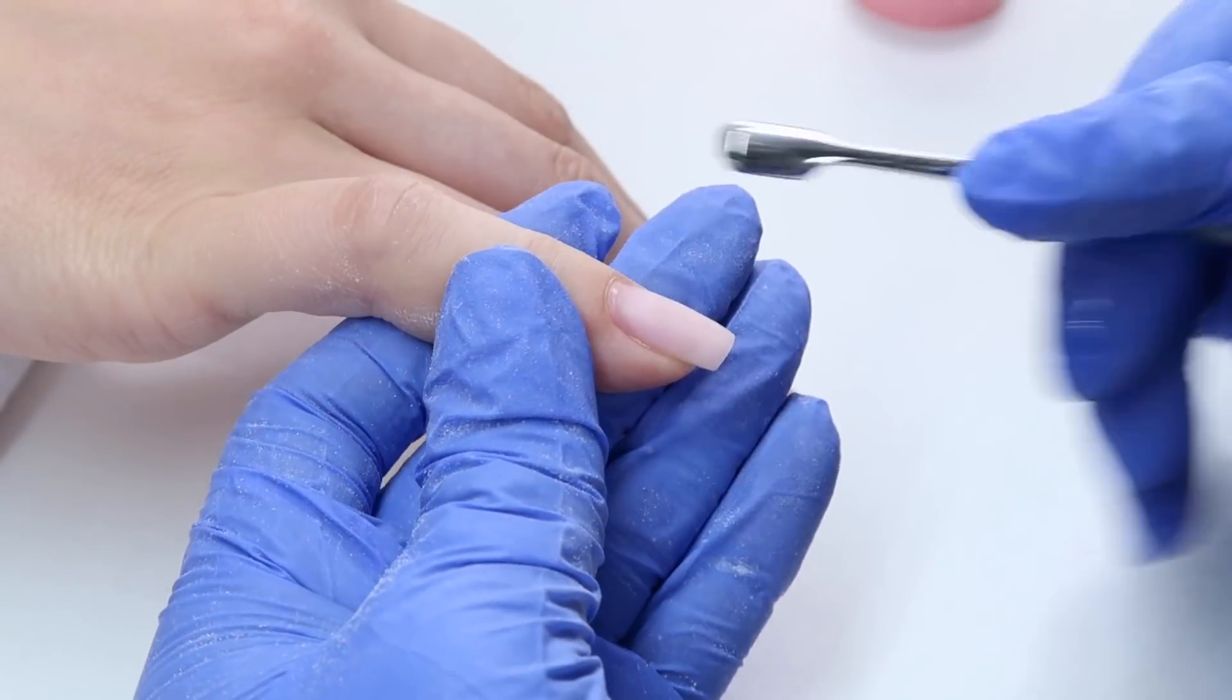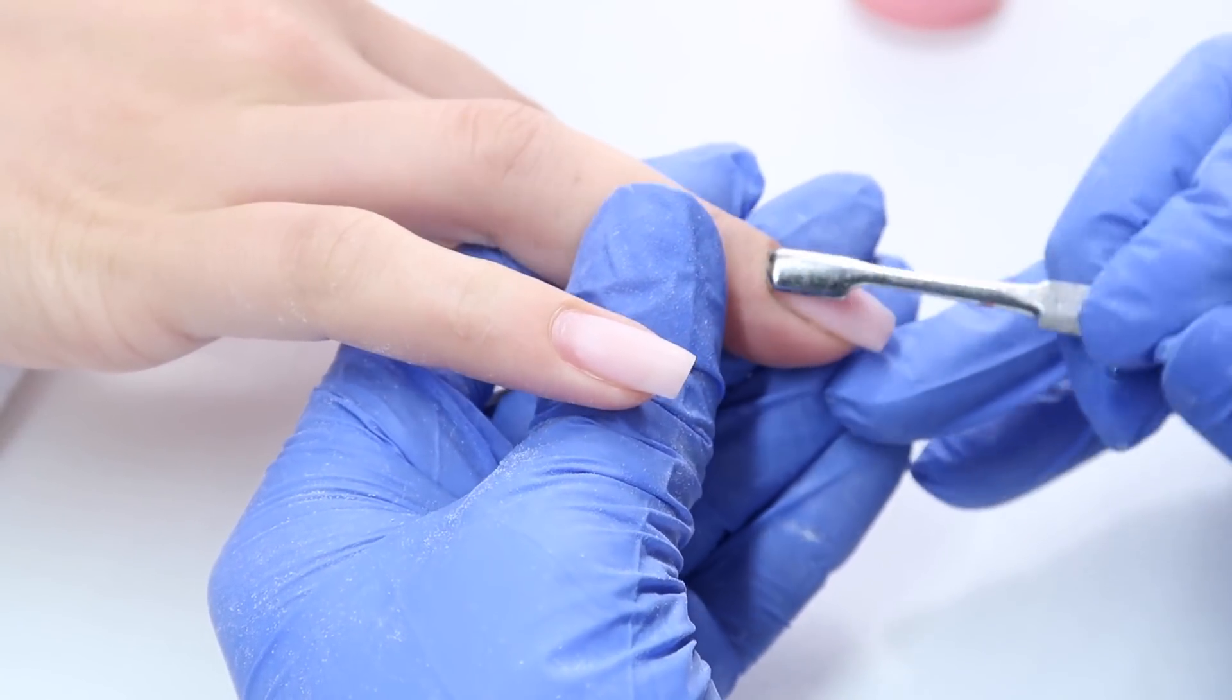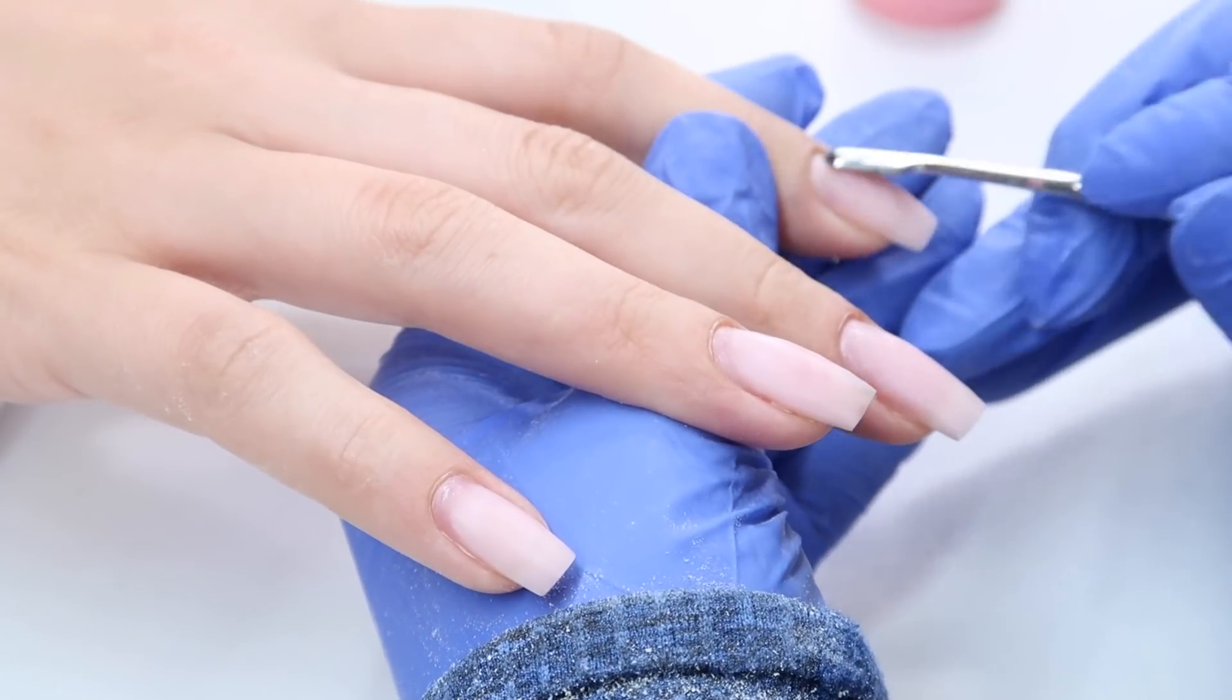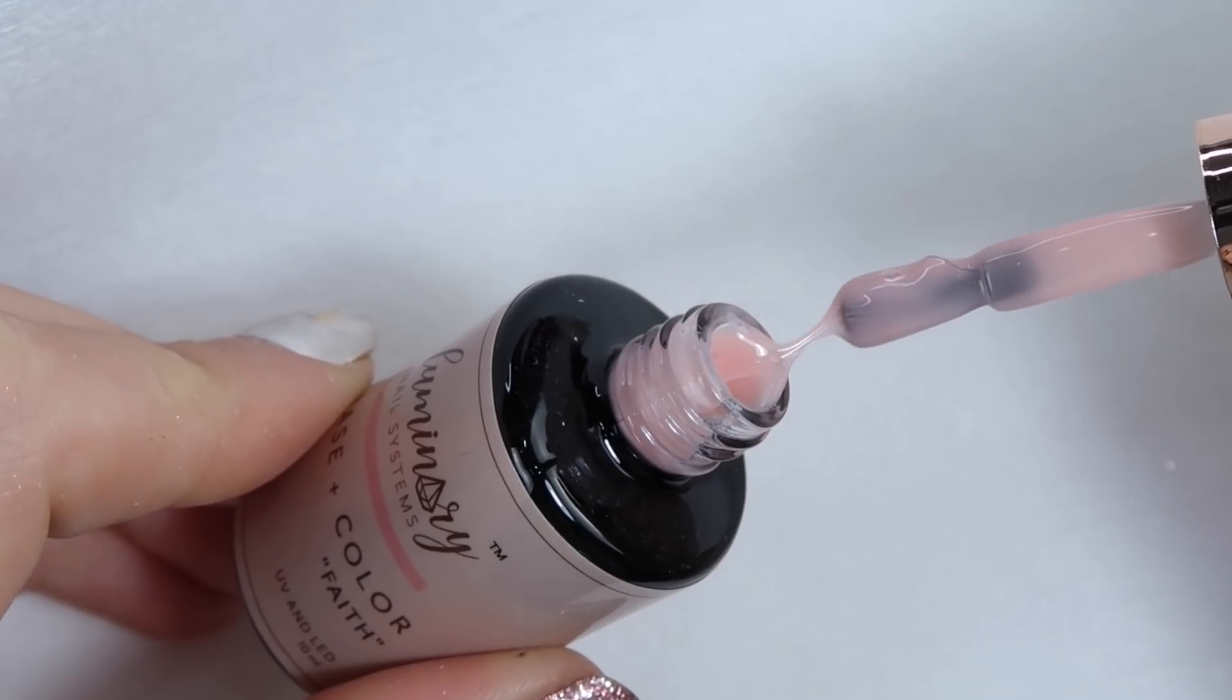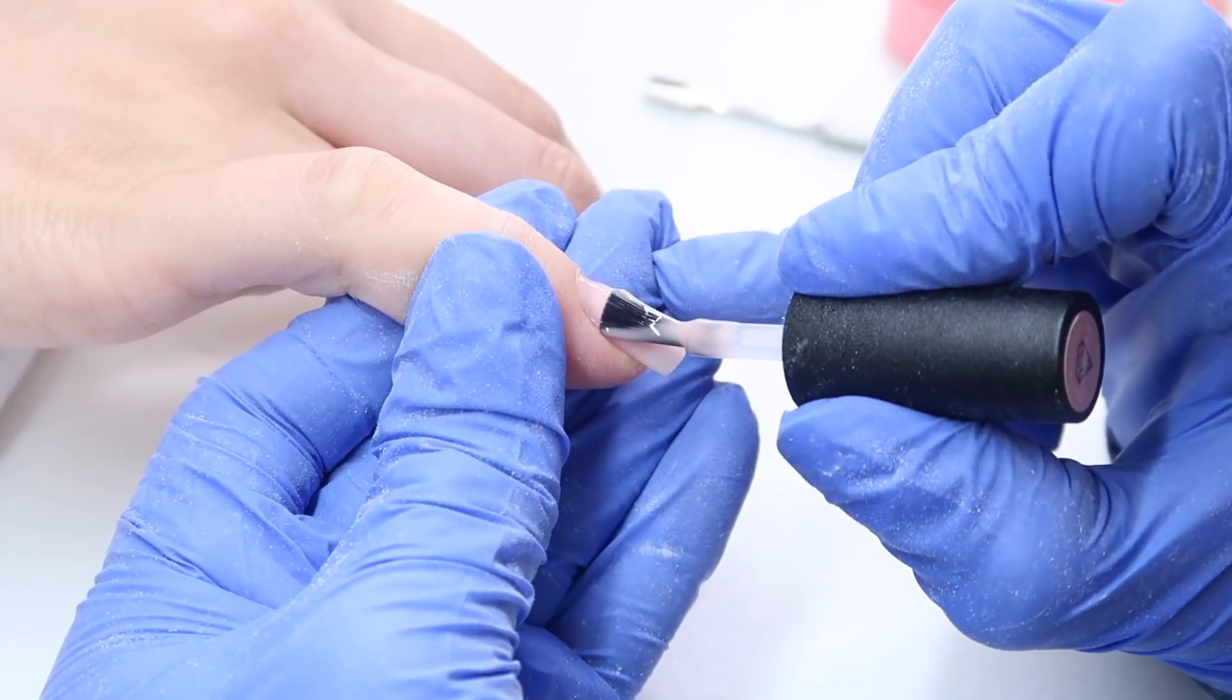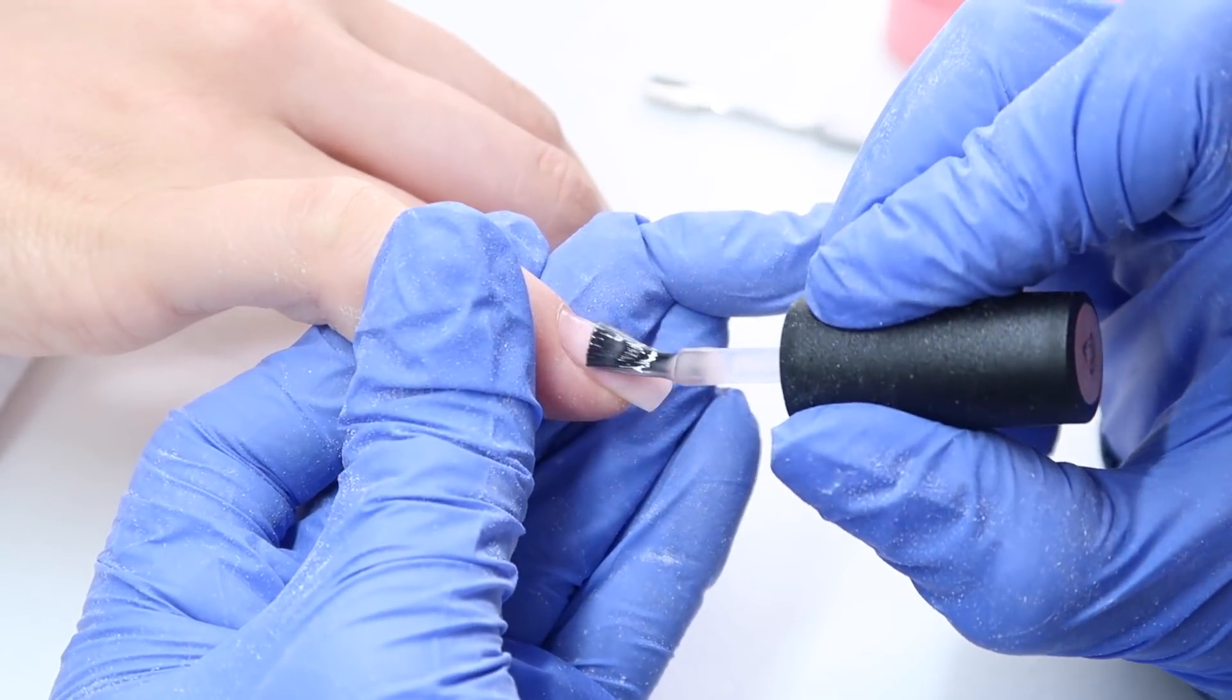Now that all my prep has been done, we can start with application. I'm using my cuticle tool again, just pushing back the skin to make sure I get a nice even close application. I'm doing that on the first four nails and then I'm using my color Faith from Luminary. This is a base plus color and it's a really beautiful kind of pinky peachy light nude color. I'm applying a super thin layer on all the nails.